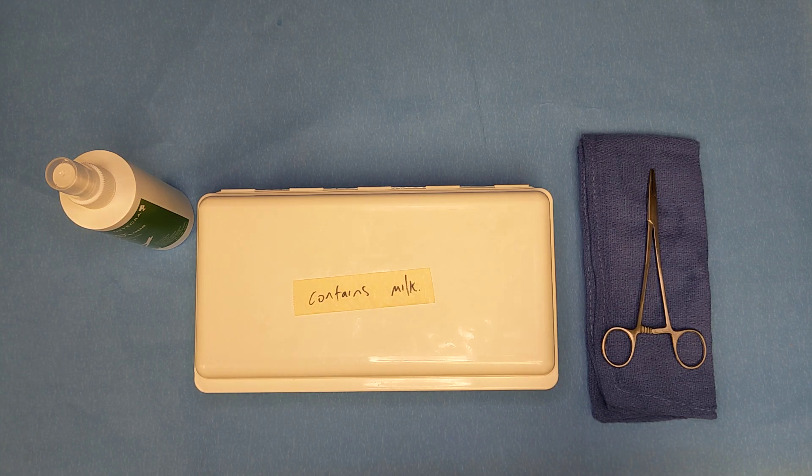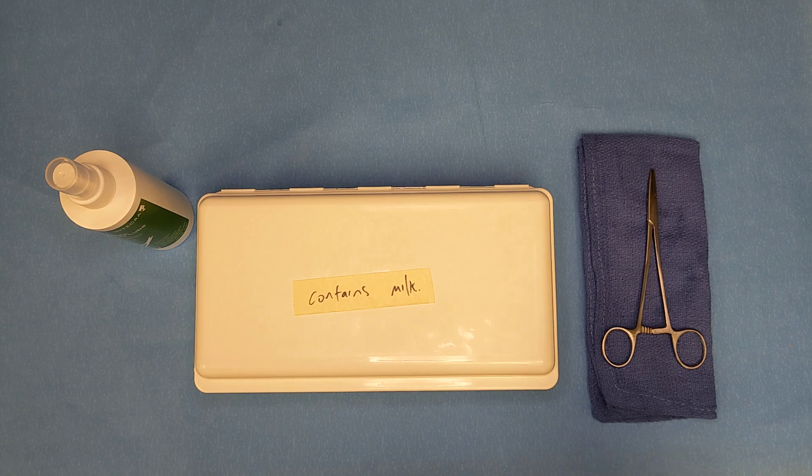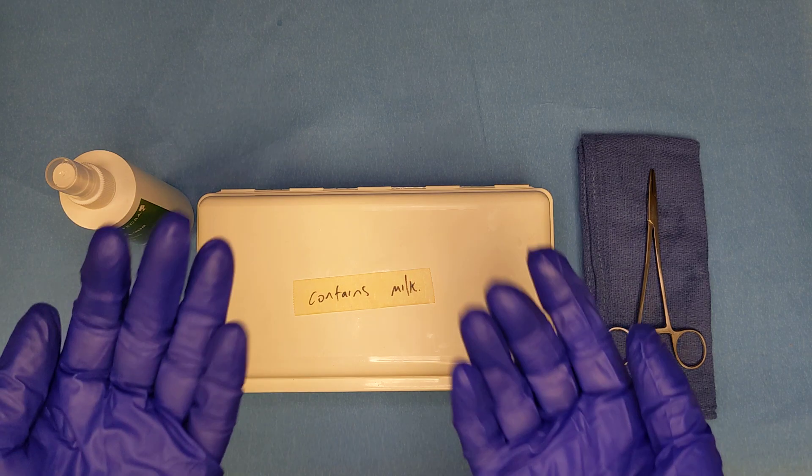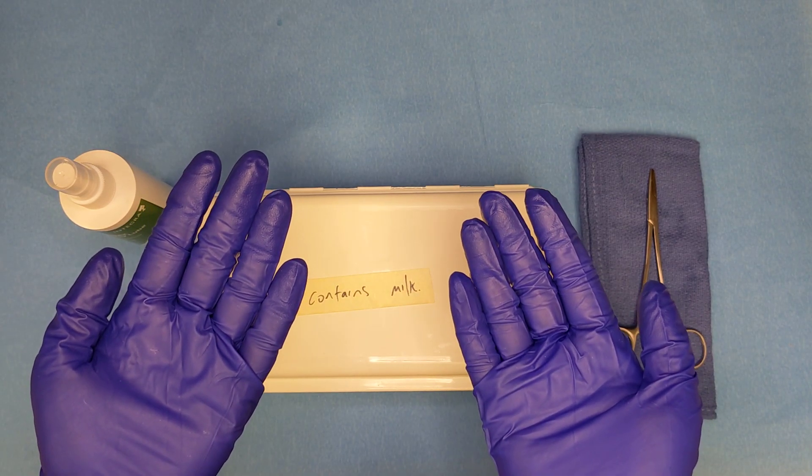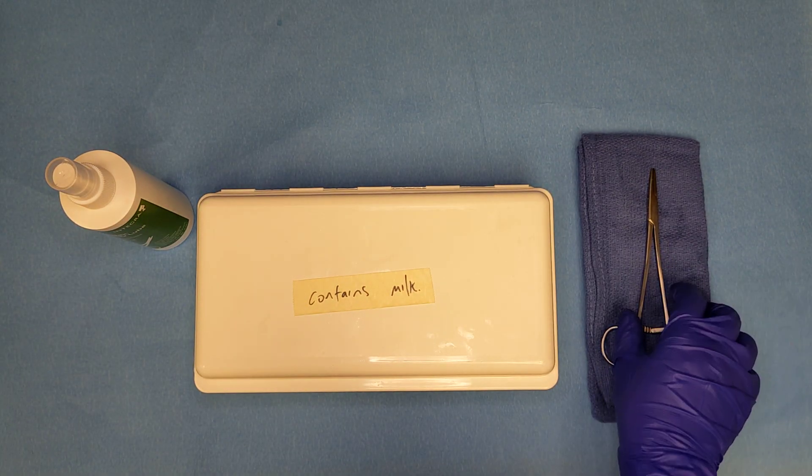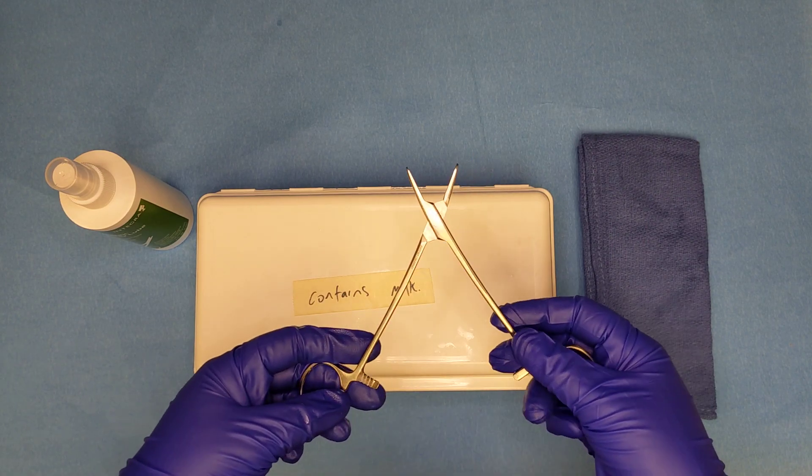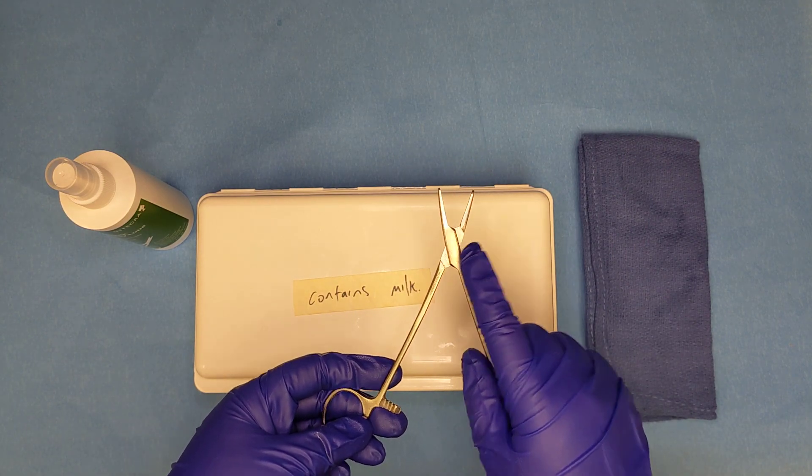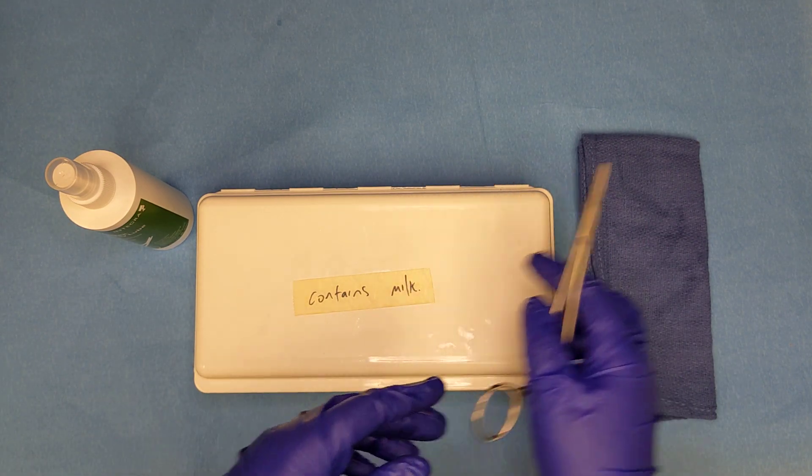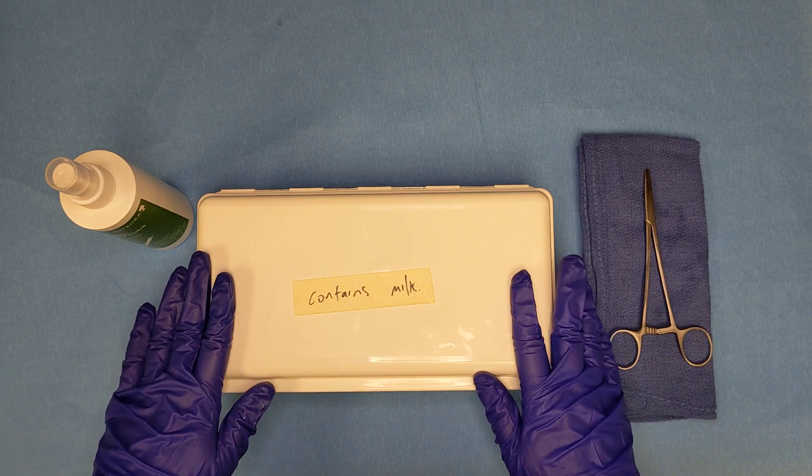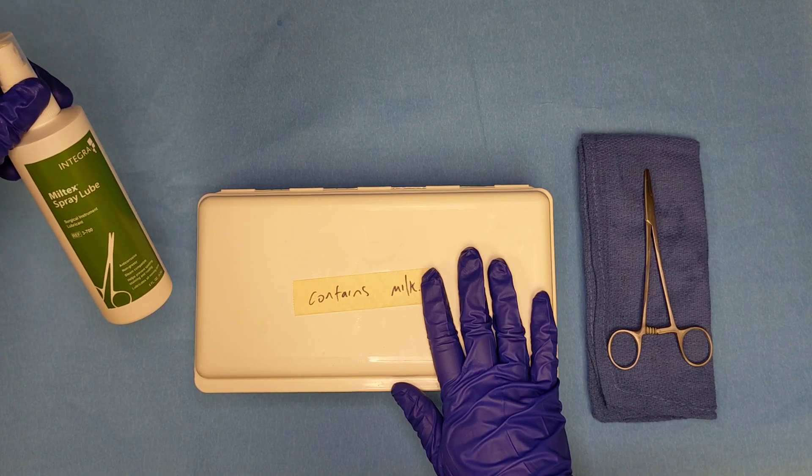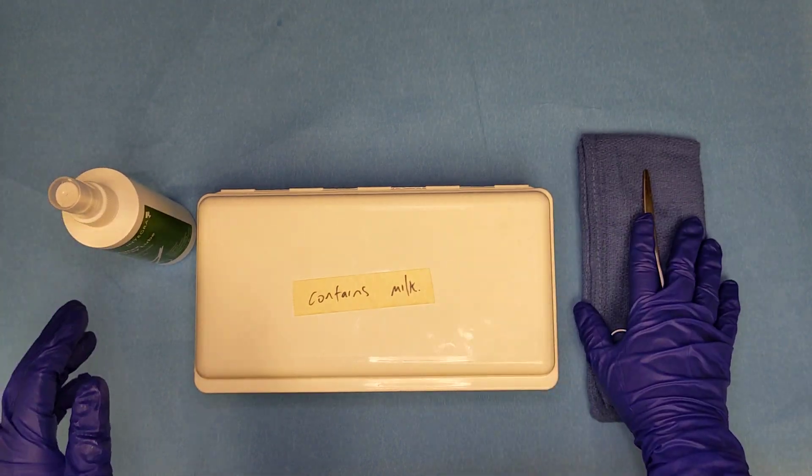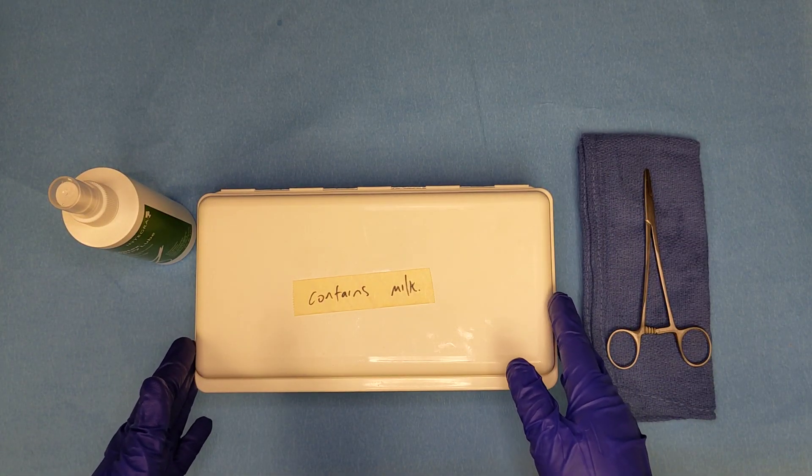The supplies that we need to perform instrument lubrication include our correct PPE, which is our gloves, because instrument lubrication is a chemical. We need our instrument with a moving part; in this case we have a needle holder with a box lock, so we need to lubricate the box lock. We need our lubrication container, your instrument lubricant, and then a soft cloth just in case.